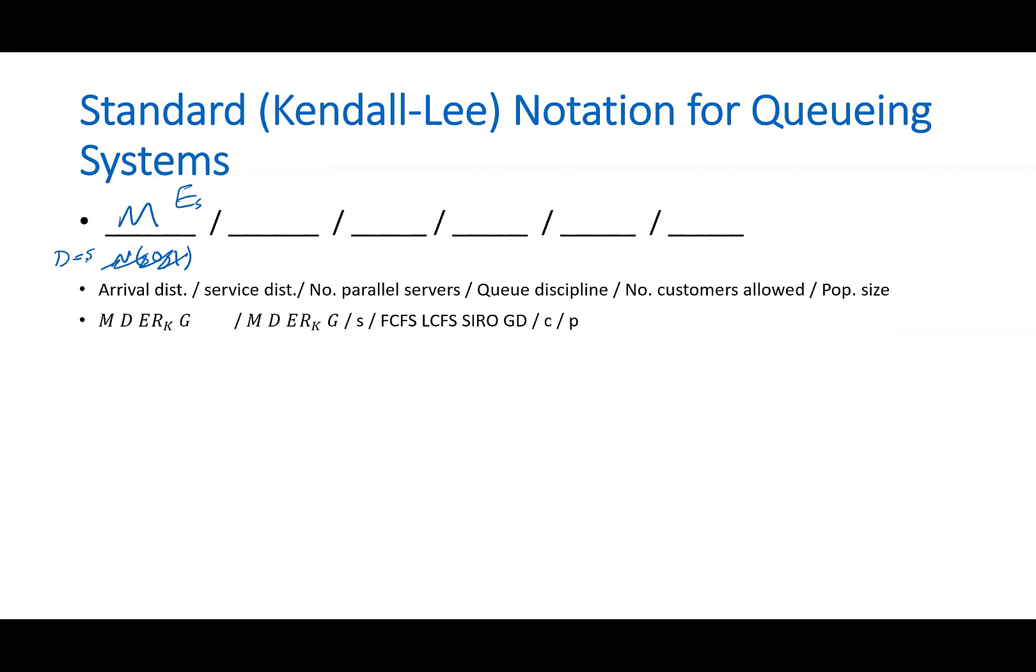ERK means that arrival has an Erlang distribution with K equals whatever values, 5 or whatever. And G means general distribution, which means anything can be there. Or we cannot assign a specific distribution to the arrival process. Can be anything. We are talking about the system whose arrivals could be anything.